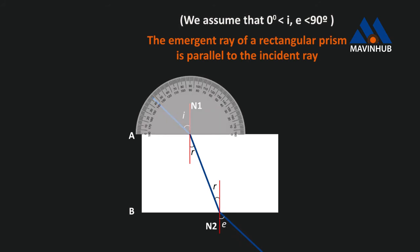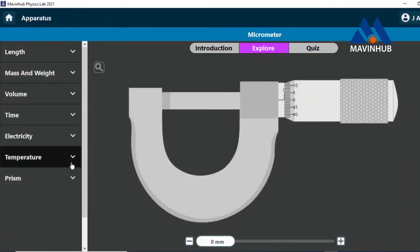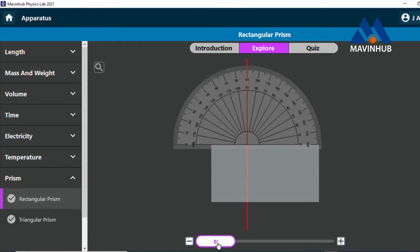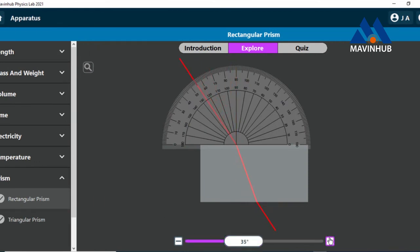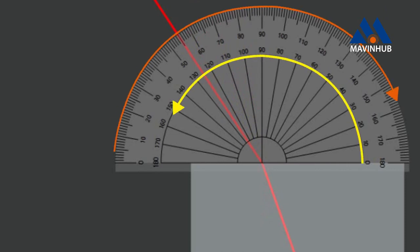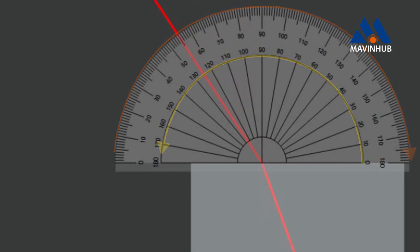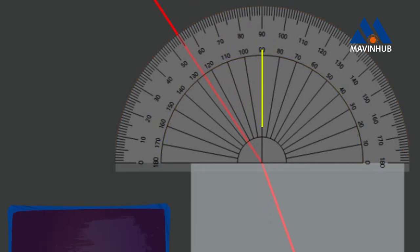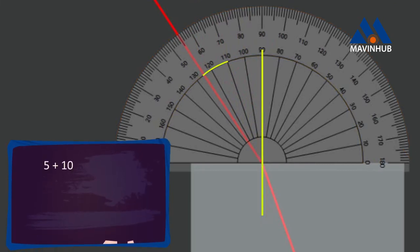I will be using Marvin Hopp Lab to illustrate this. You can download the app at www.marvinhopp.com. As you can see here, the protractor is placed on the surface where the light ray passes through the prism. It is graduated from 0 to 180 degrees by 10-degree increments. In this example, the angle of incidence to the normal is 5 plus 10 plus 10 plus 10, which equals 35 degrees. Therefore, the angle is 35 degrees.